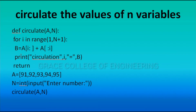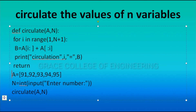The keyword def is used to define a function. def circulate — 'circulate' is the function name, with parameters a and n. The function will not execute first; it only executes when called. The main program starts with a = [91, 92, 93, 94, 95].